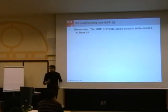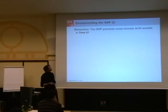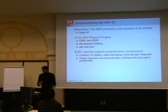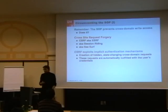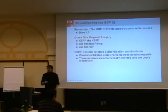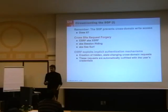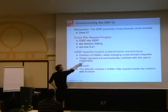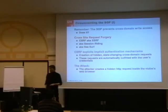The same origin policy should prevent cross-domain write access — meaning causing stateful actions on web applications. This is cross-site request forgery in its purest form, as it was documented years ago. What CSRF does is create hidden cross-domain requests inside the browser without the user's consent or knowledge. And as we are using implicit authentication, these requests are automatically outfitted with the user's credentials.